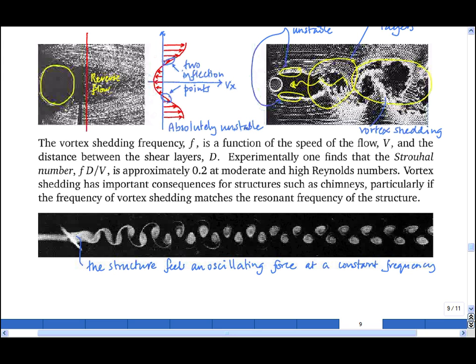Of course, this is very dangerous, and it can cause chimneys to collapse. And on some chimneys, you see helical strakes around the outside of the chimney. And those are put there to disrupt vortex shedding, and therefore avoid the vortex shedding locking in with the resonant frequency of the chimney.